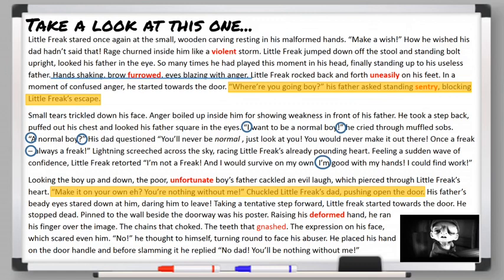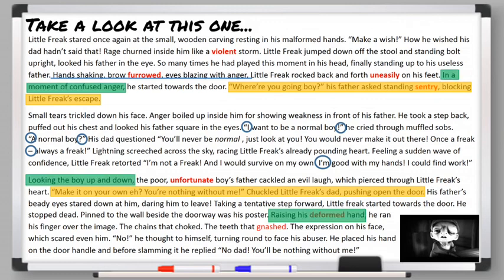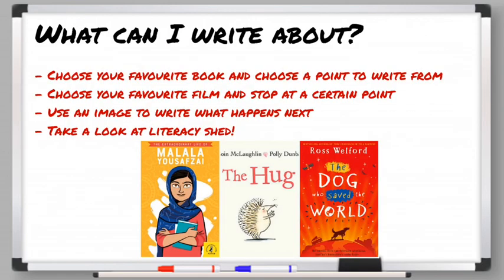Here are some really good ideas if you're thinking I'd quite like to have a go at writing the end of my own story. You could choose your favourite book, read up to a certain point and then stop and then write your own ending. Have control of the downstairs television and put your favourite film on or even a film you've never seen before. Watch it until you're almost at the end and then stop.